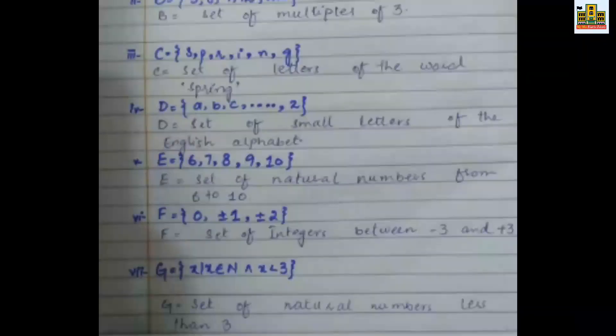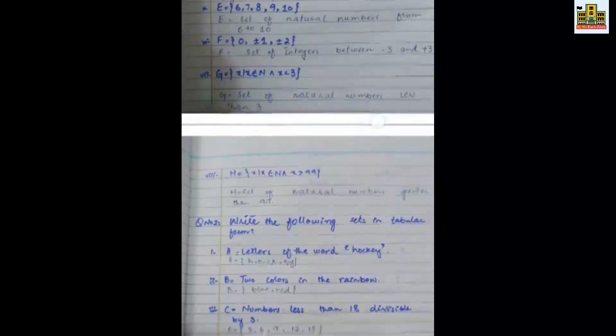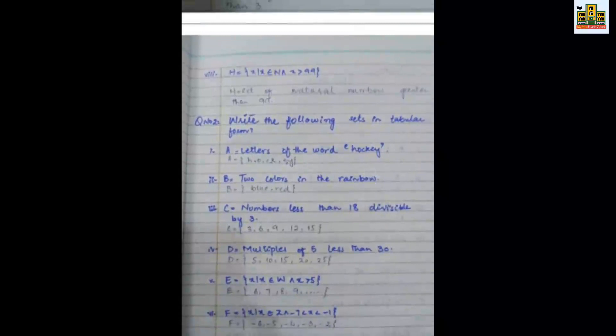Then what do you have? G is equal to x such that x belongs to natural numbers and x is less than 3. So this set of natural numbers is less than 3. Same as it is, you have to have next set given. The natural numbers is greater than 99 given. In question number two, what do we have? Write the following set in tabular form. Tabular form means that descriptive form is opposite form.